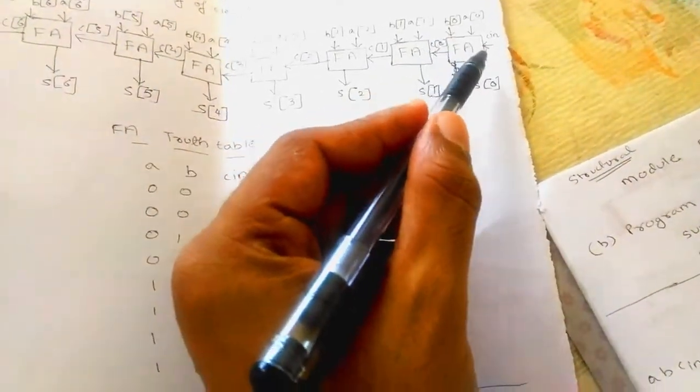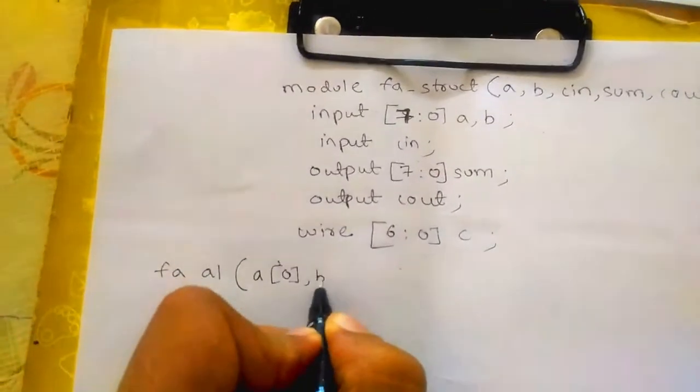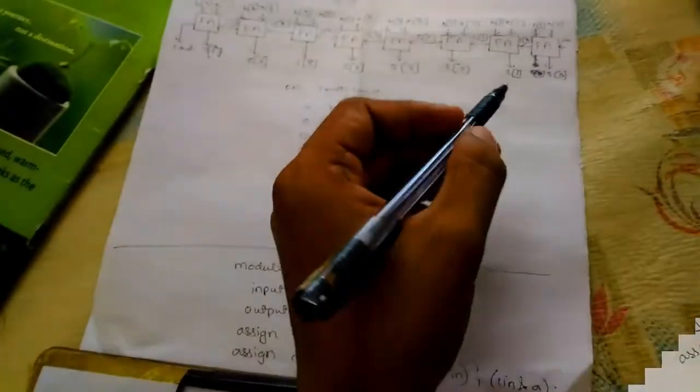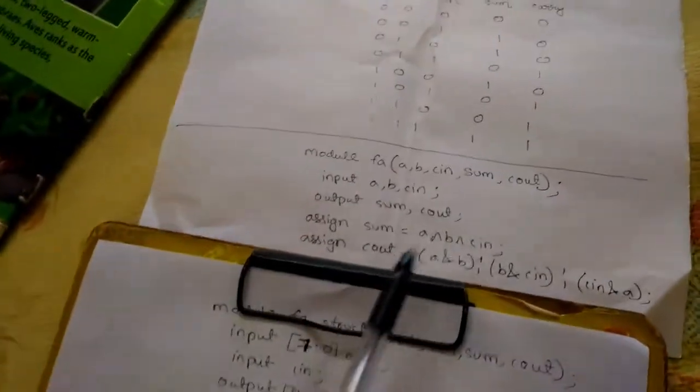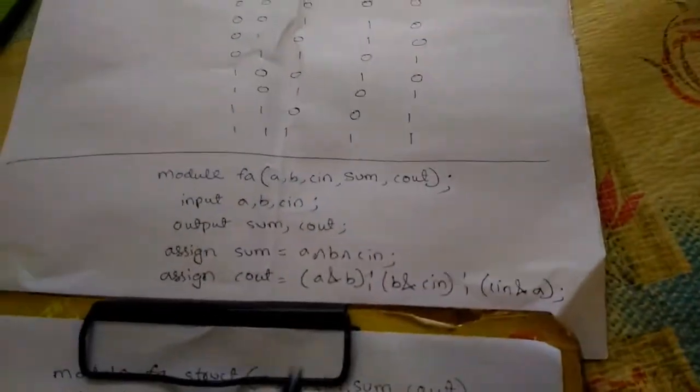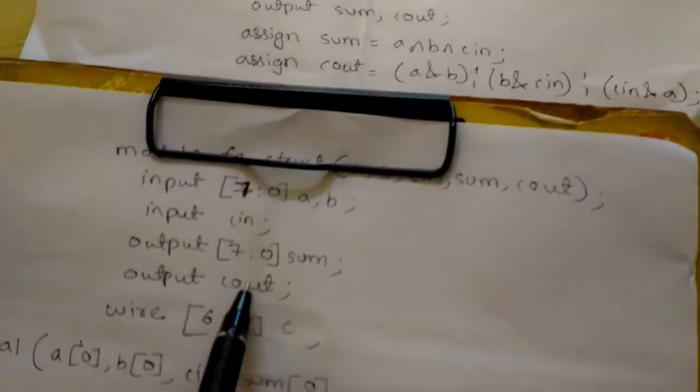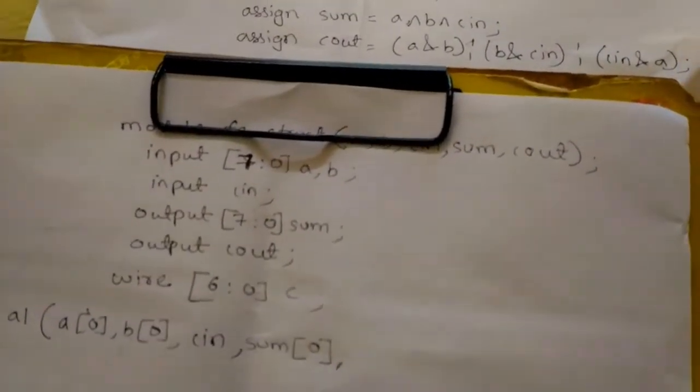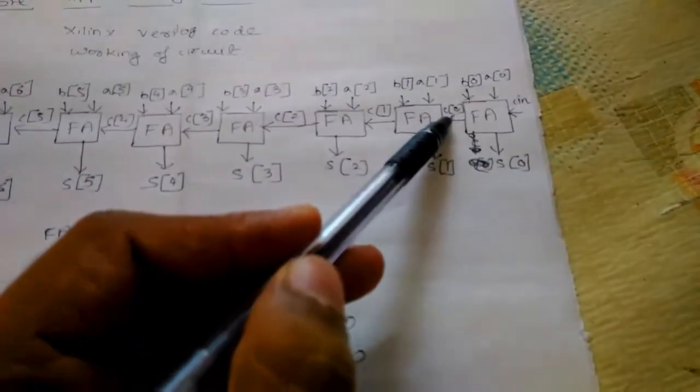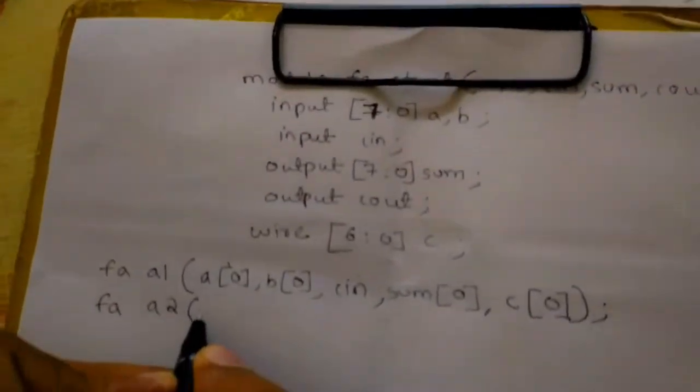In order to call the first full adder, we have to write a0, b0, cin. Since it is similar to the full adder program, we are port mapping. After the video got disconnected, the output of this full adder is sum0 in the 4th position. And next carry output c0 is in the last position. Similarly I have to repeat this for next full adder with inputs a1, b1, c0 and outputs sum1 and c1.